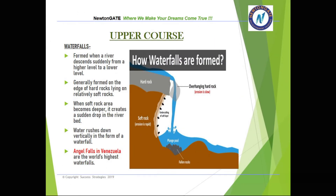Waterfalls look extremely majestic and beautiful, but how are they formed? Waterfalls are formed when a river descends suddenly from a higher level to a lower level. They are generally formed on the edge of hard rocks lying on relatively soft rocks. When the soft rock area becomes deeper, it creates a sudden drop in the riverbed, and water rushes down vertically in the form of a waterfall. Angel Falls in Venezuela are the world's highest waterfalls. The hard rocks are layered on top of soft rock where erosion is rapid, and the pool at the base of the fall is called the plunge pool.